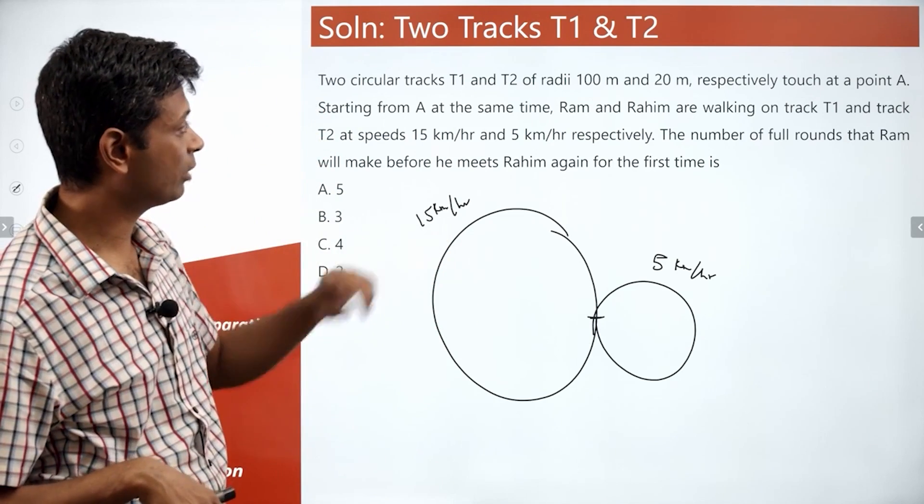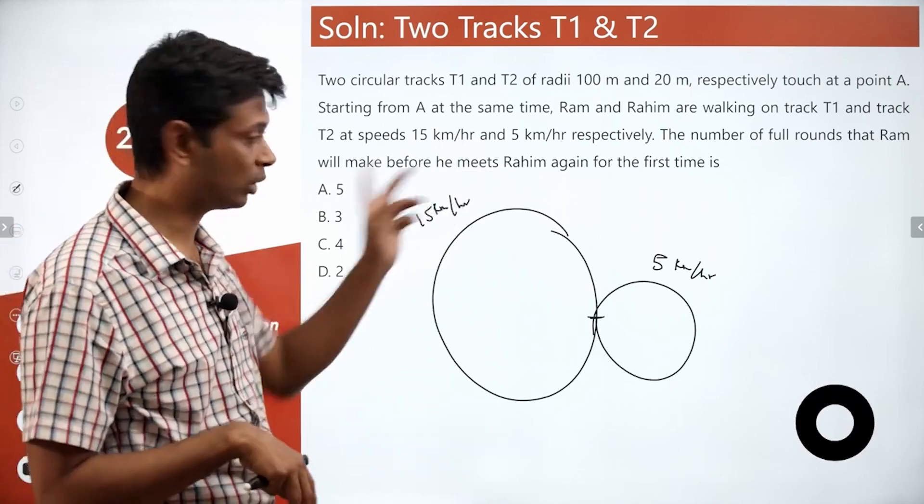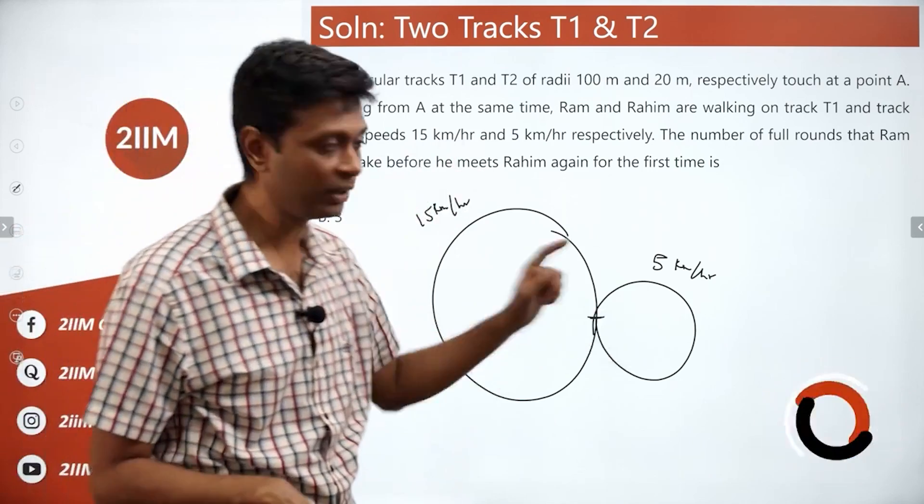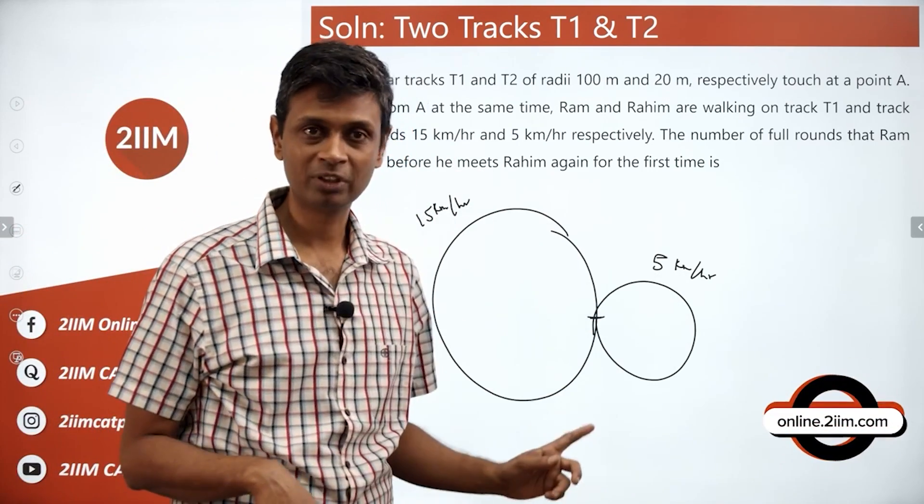Now, this has a radii of 100 meters. We'll have to think about 2 pi into 100. This is a radii of 20. We'll have to think about 2 pi into 20.